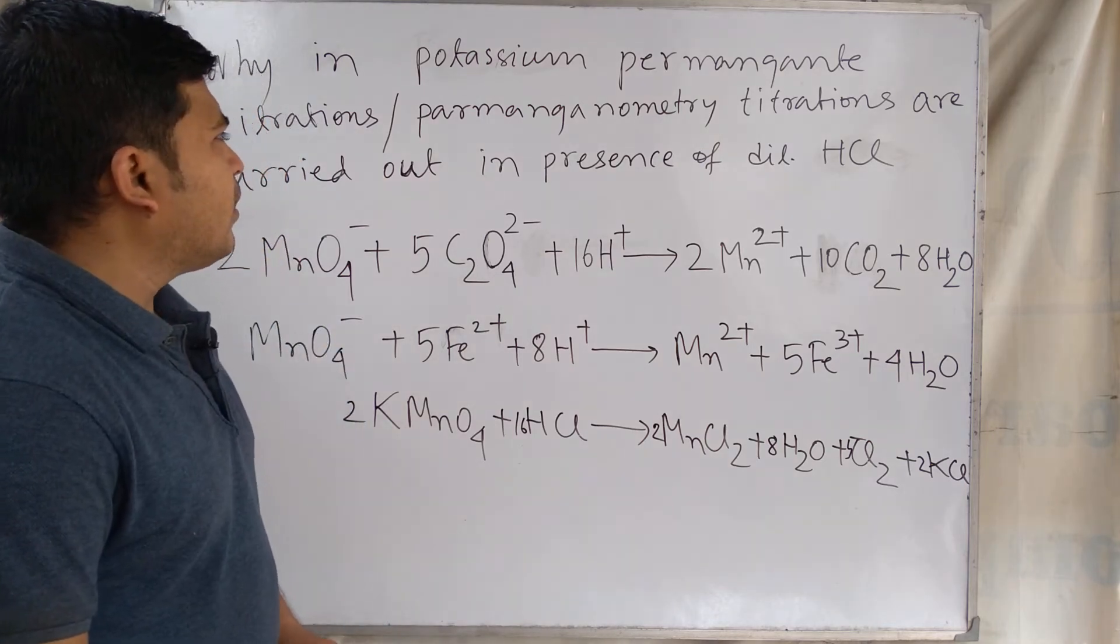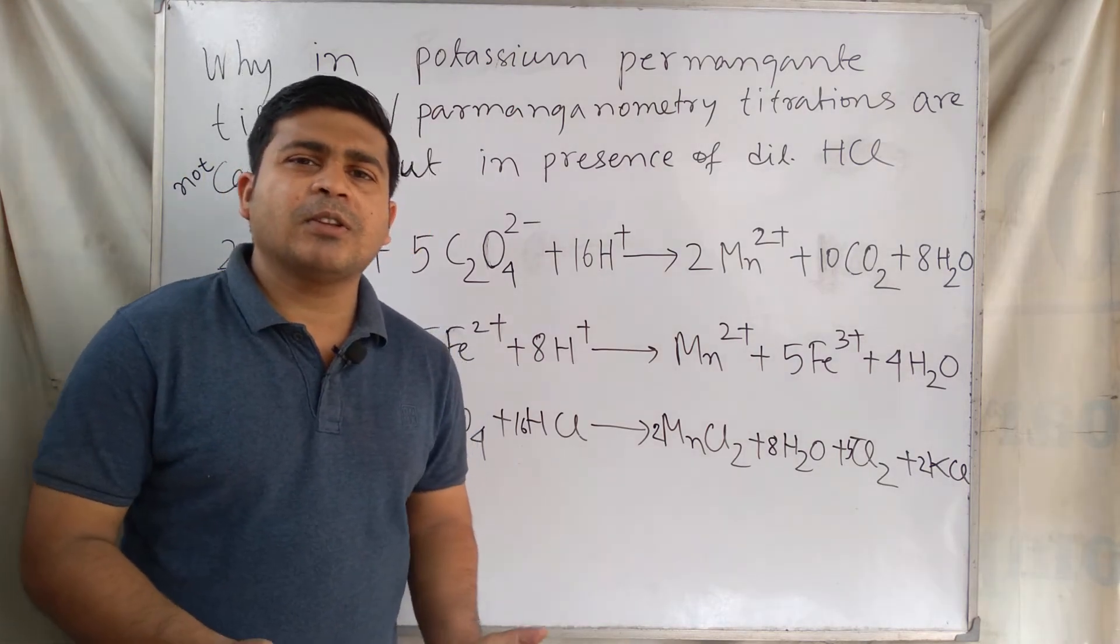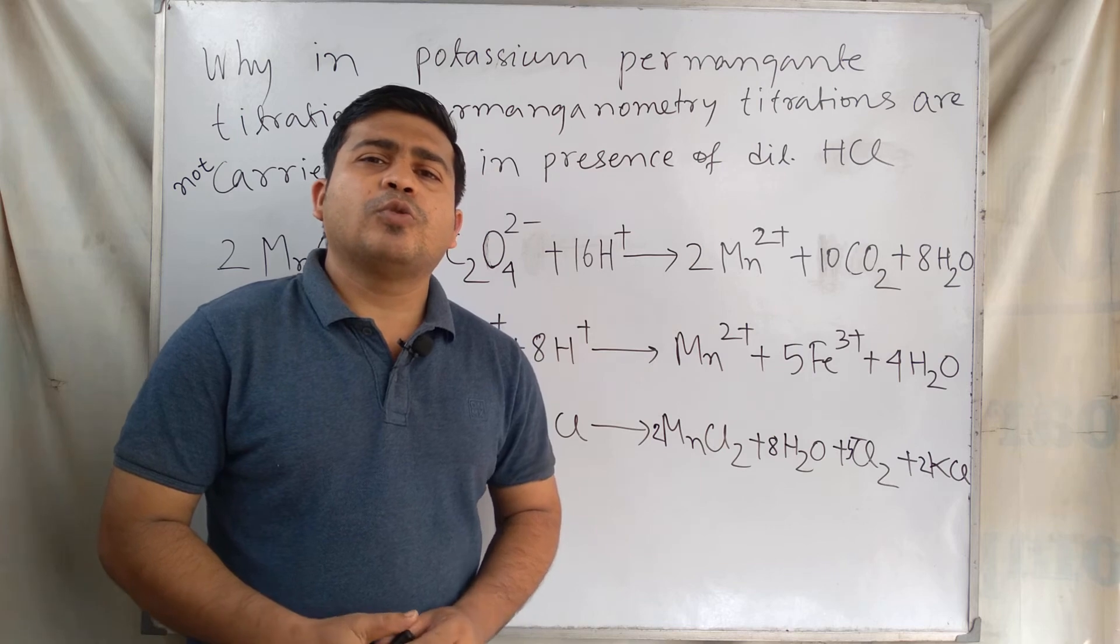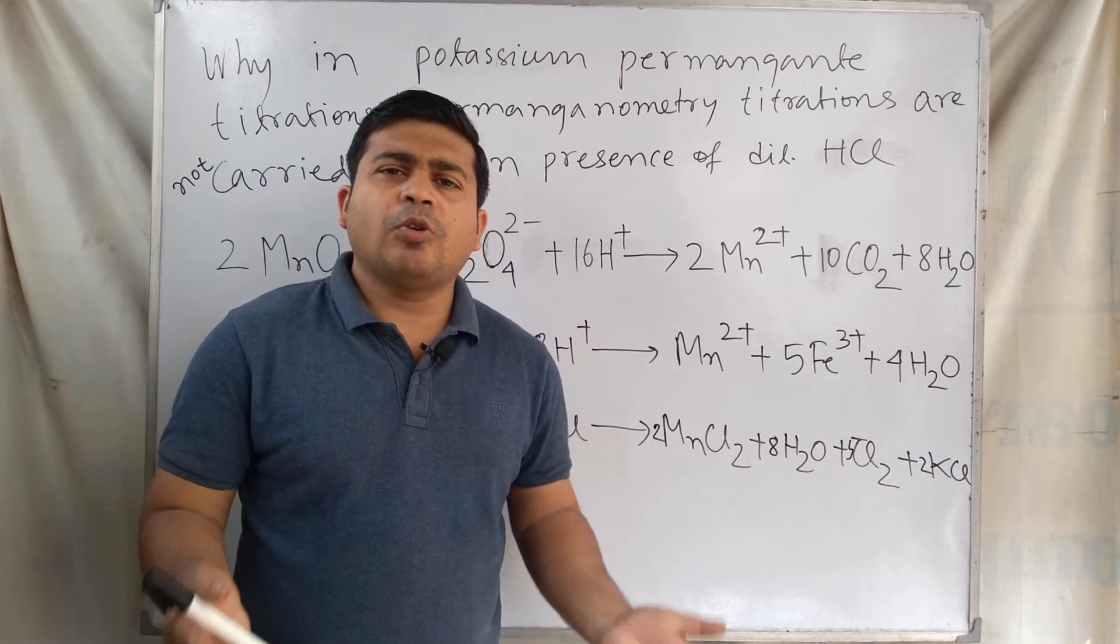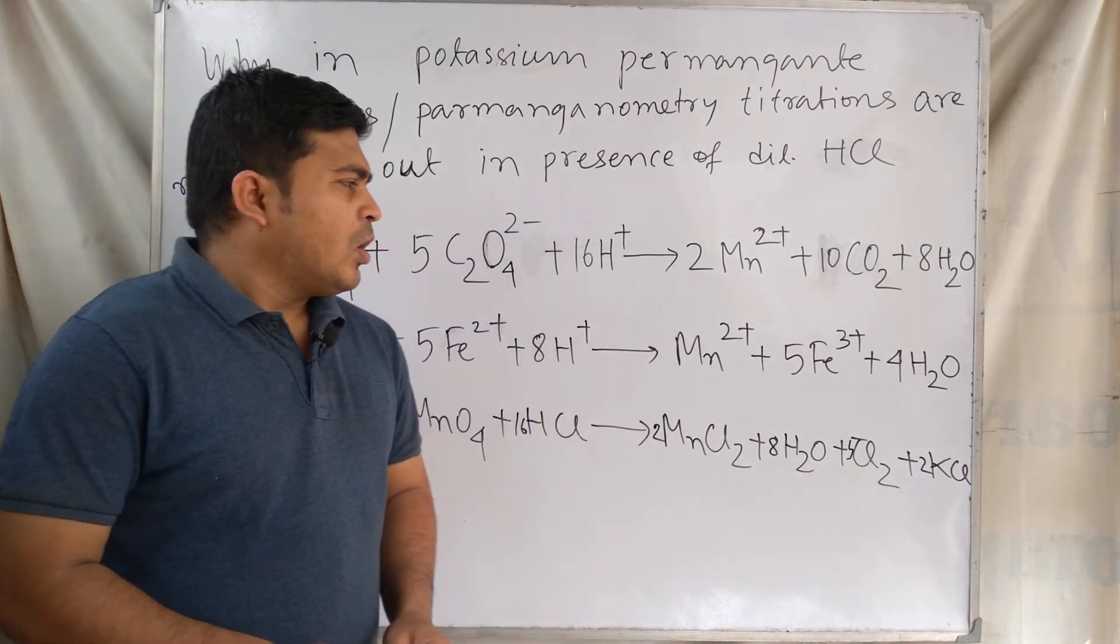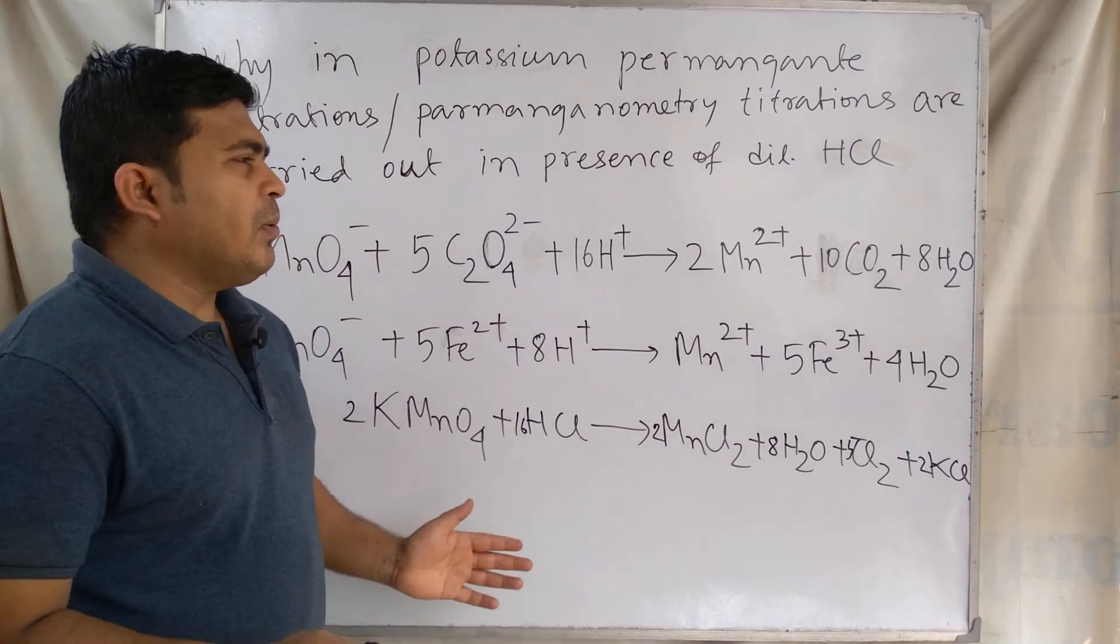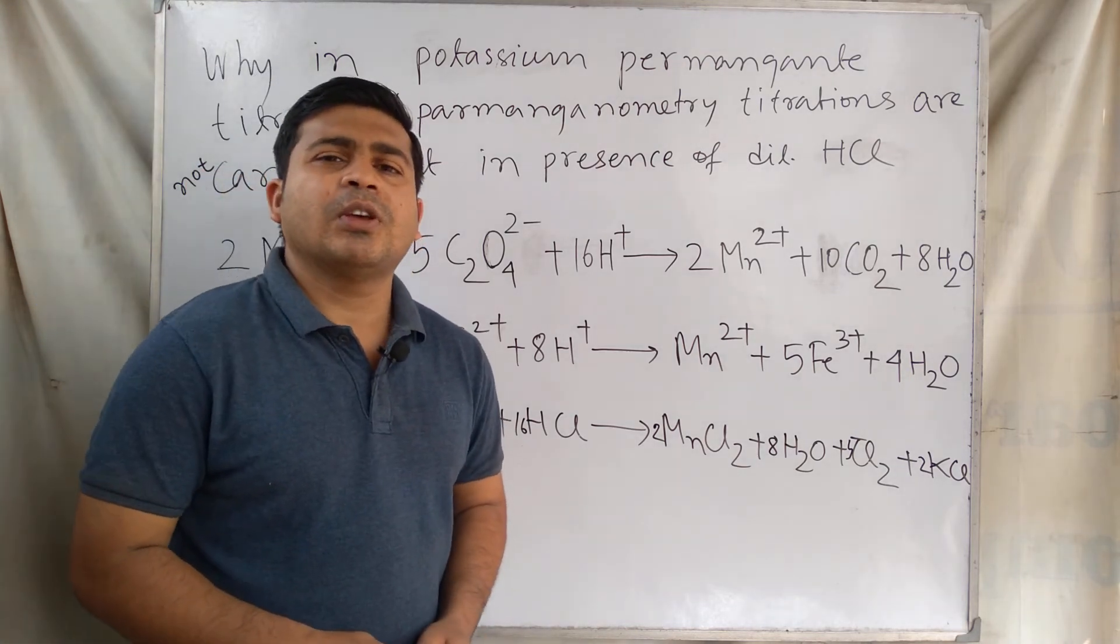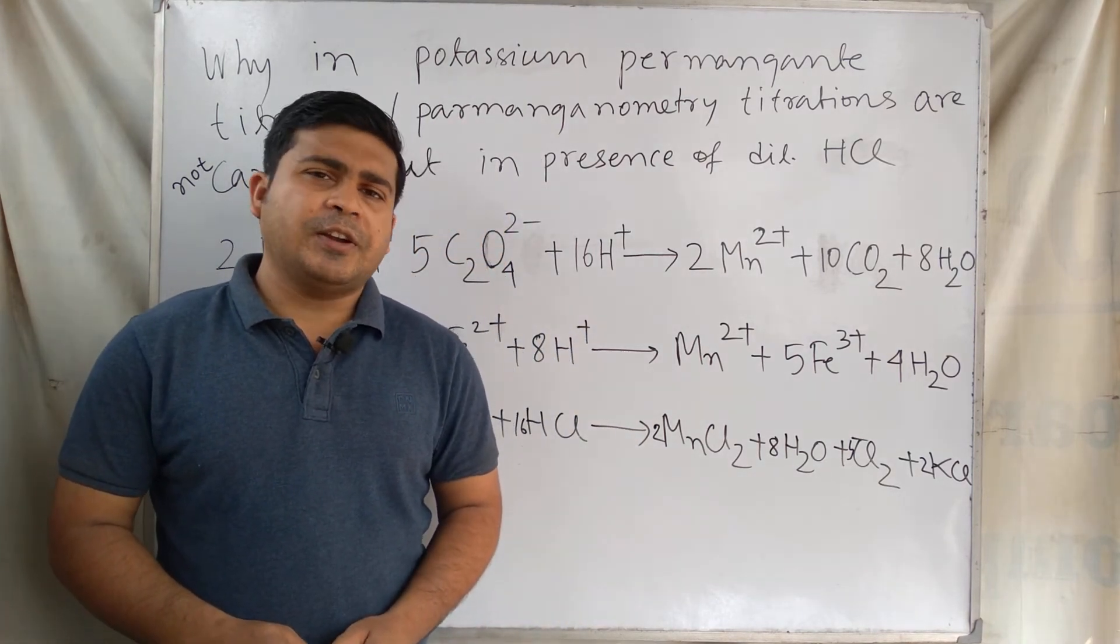For this reason, permanganometry titrations or potassium permanganate titrations which are carried out to quantitatively estimate chloride, oxalate, etc., we always carry out this type of titrations in presence of dilute sulfuric acid. This is the reason why dilute sulfuric acid is used for permanganometry titrations.